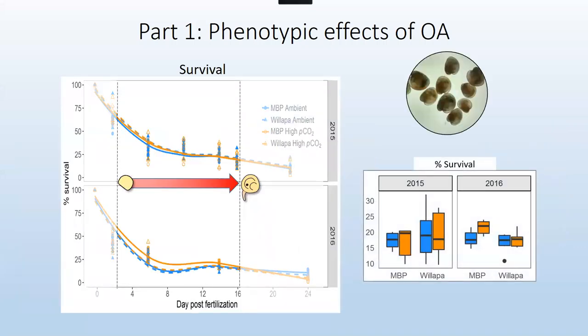As we move into these veliger stages, the striking thing is that all the differences we saw early on disappeared. In both years, we had very consistent survival and growth in our conditions through to that pediveliger stage. So we saw the same amount of mortality and growth both in MBP and low CO2, high CO2. So no real changes that were apparent earlier on carried through to this veliger period.